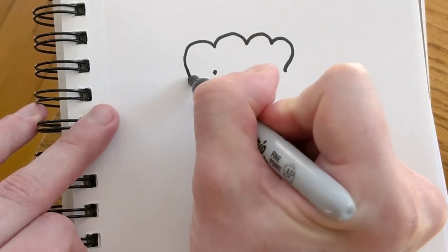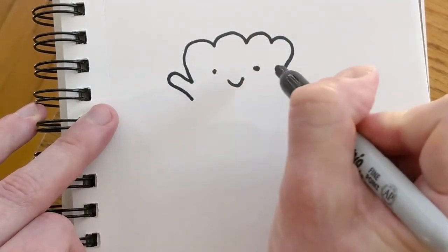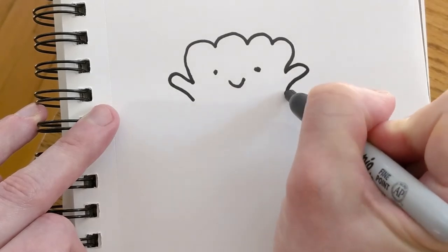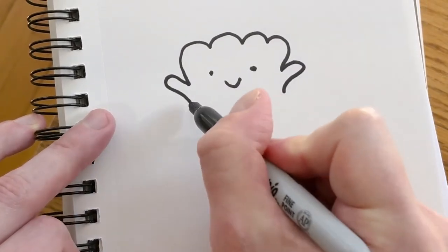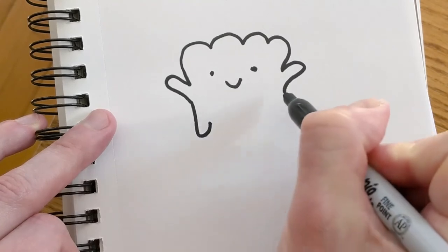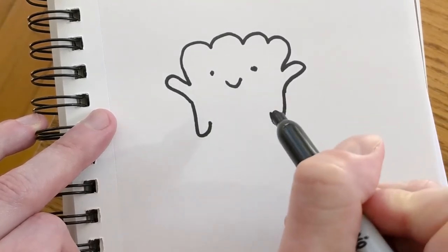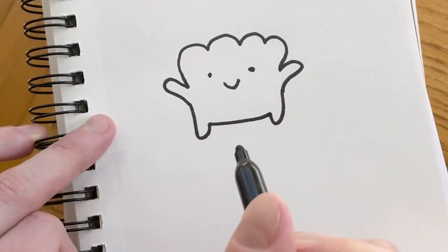And he has funny simple little arms that stick out to the sides. And his legs look very similar. One down here, one down there. Then I just draw a straight line to connect them.